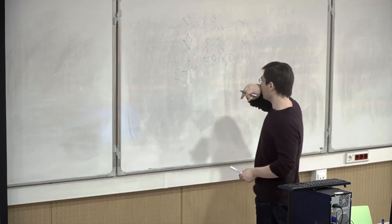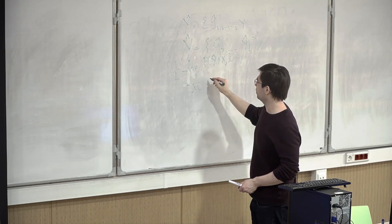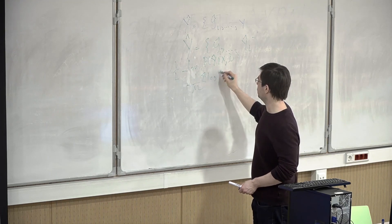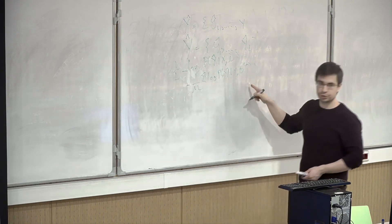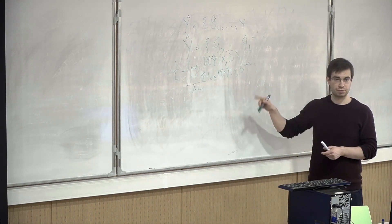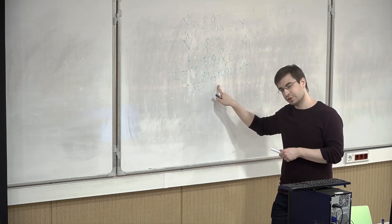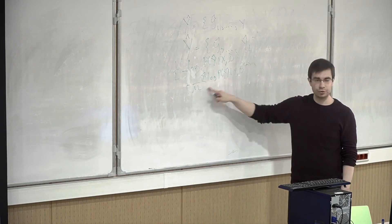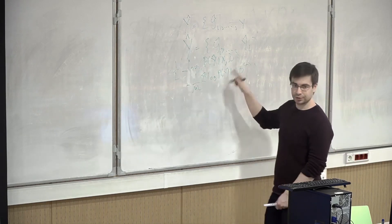We can also use the average log probability of all the models across M models — this will be an estimate of data uncertainty, since each single model estimates only data uncertainty. We can also look at the difference between these, which gives another measure.